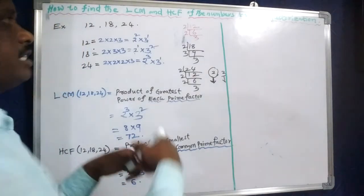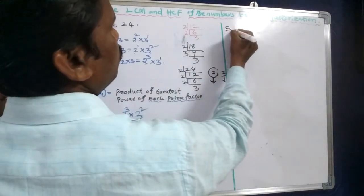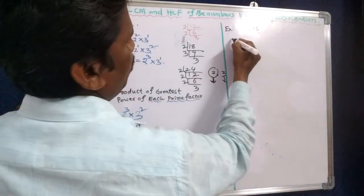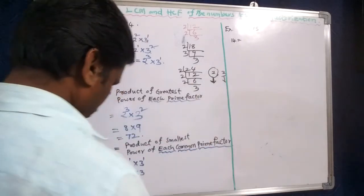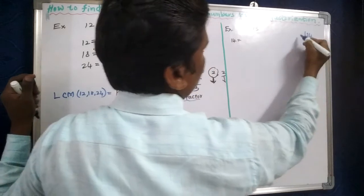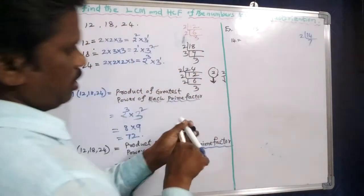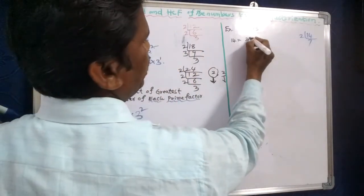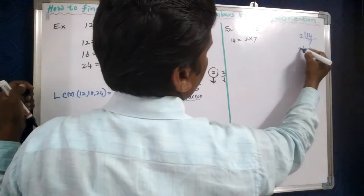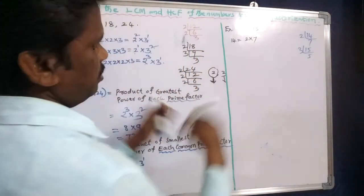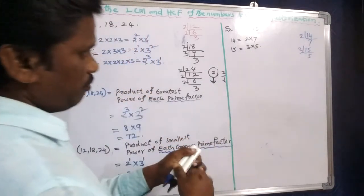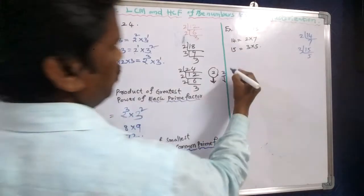Another example: find the LCM and HCF of 14 and 15. Now, 14 is equal to 2 into 7, and 15 is equal to 3 into 5.